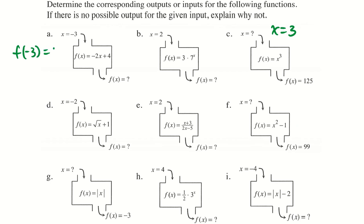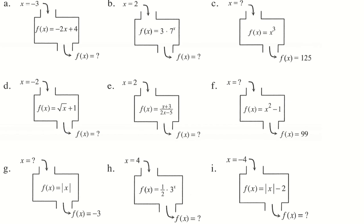Next there's a set of problems. The first one: if negative 3 goes in, what's the output? The second: input of 2, what's the output? Then: what input would give me 125? Negative 2 goes in, 2 goes in — what goes in to give me 99? What goes in to give me negative 3? 4 goes in, what comes out? And negative 4 goes in, what comes out? Pause the video right now and do these exercises.